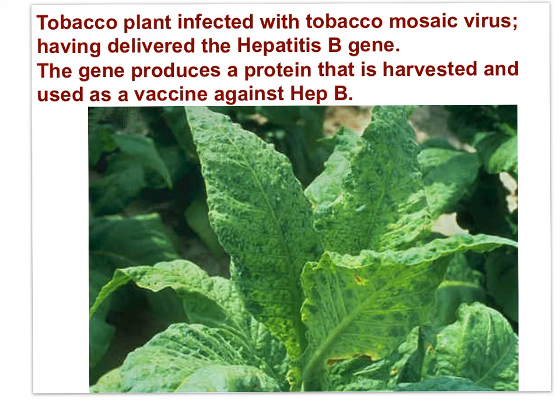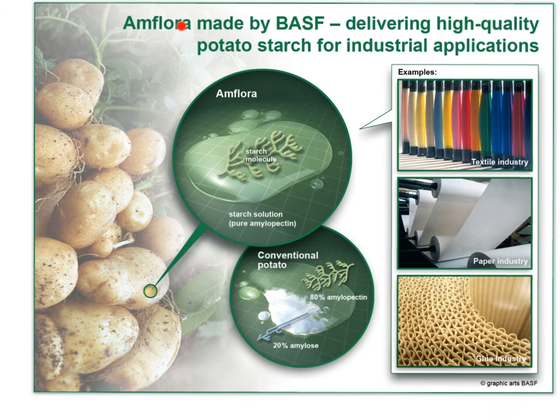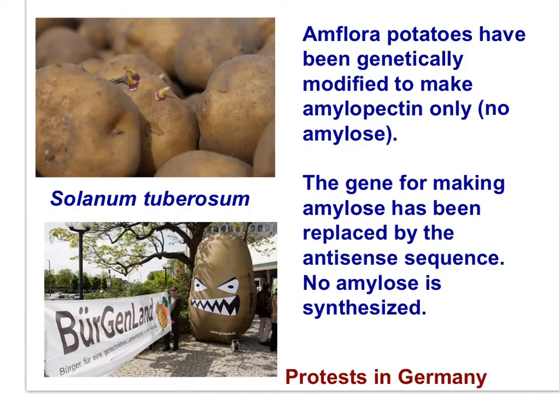Here is a tobacco plant infected with the tobacco mosaic virus, the virus having delivered the hepatitis B gene. The gene produces a protein harvested and used as a vaccine against the hepatitis B virus in people. The last of three applications in biotechnology in agriculture: describe the production of Amflora potato for paper and adhesive industries. Amflora is a genetically modified potato which only produces one type of starch — amylopectin — used for industrial applications such as paper, adhesives, and textiles.